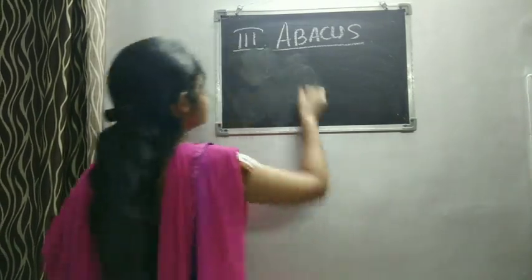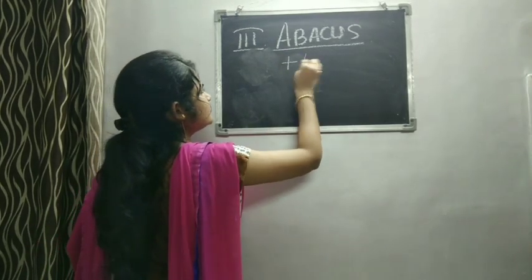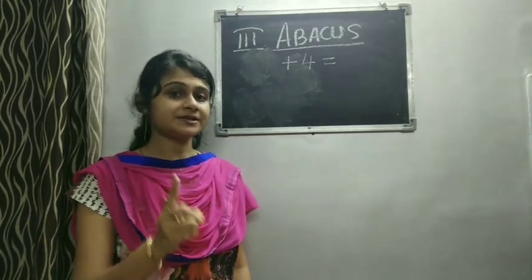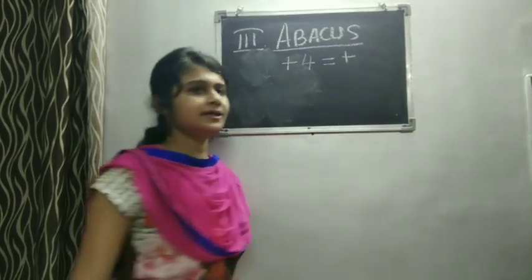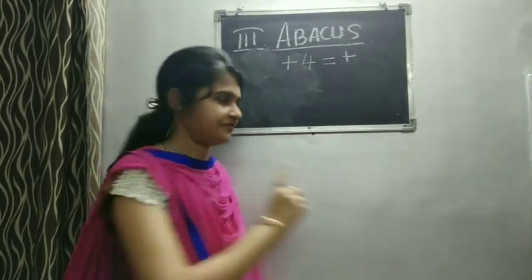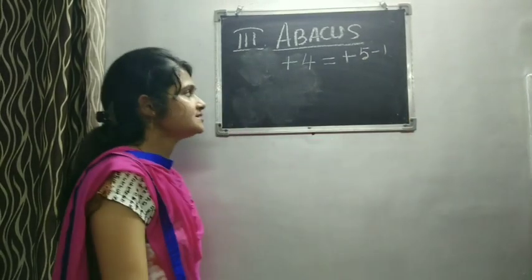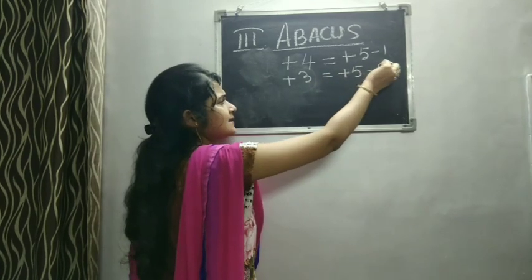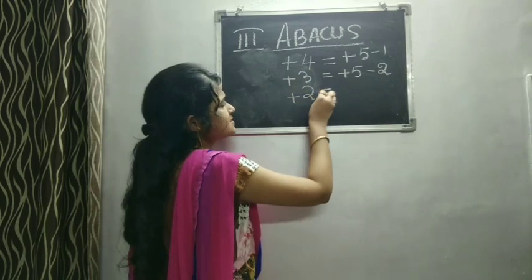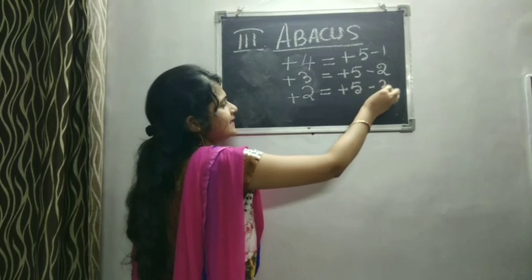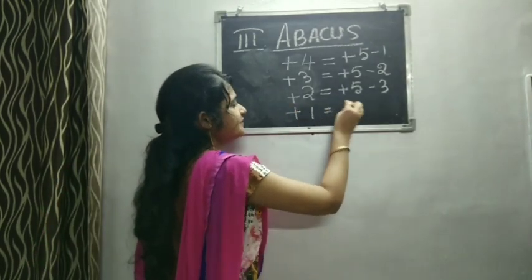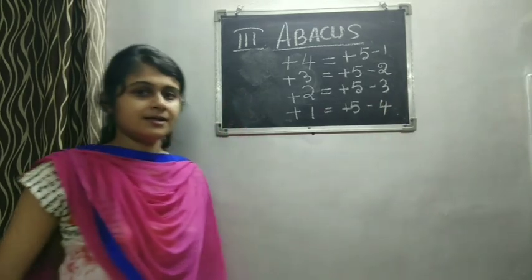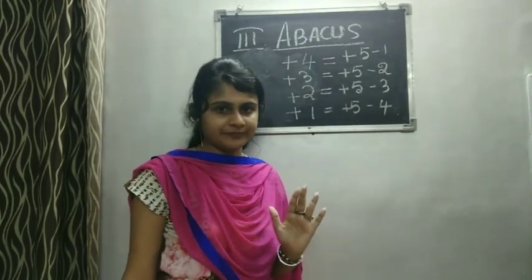So if I write: plus 4 equals - what is the process? It starts with a plus sign, and who is at the beginning - best friend or common friend? Common friend. So plus 5 minus 1. Then plus 3 - common friend is at the beginning, then the best friend. Then plus 2 - common friend first, then the best friend. And the last one - common friend first, then the best friend. This is the 1's place formula, the main formula.